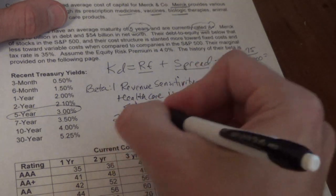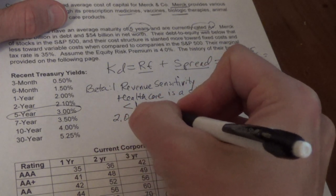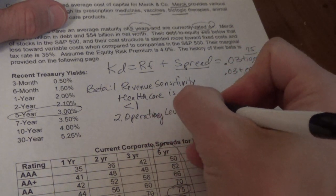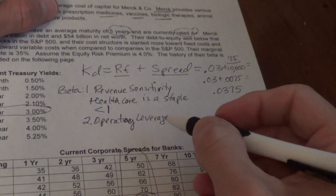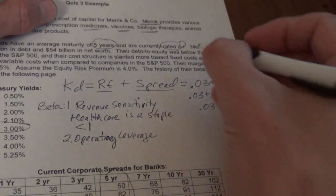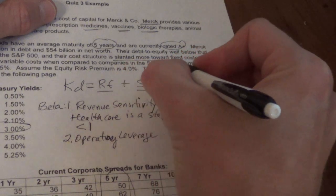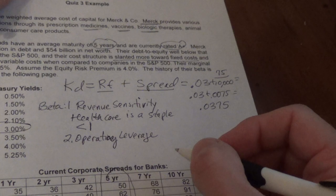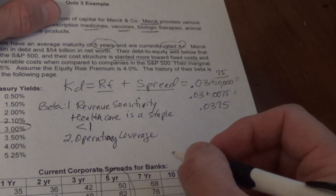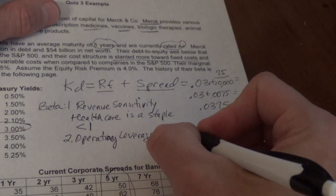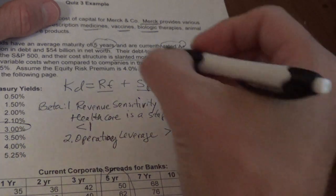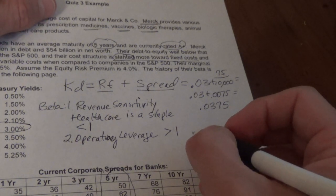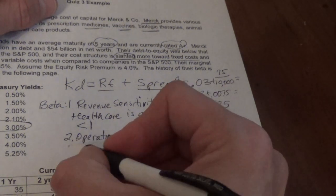The second thing is operating leverage. Operating leverage is a measure of how much fixed cost is in their structure. In this case they are slanted more toward fixed costs than the average S&P company, which makes sense because as a pharmaceutical they have high research and development costs — an ongoing cost. That implies greater than one, but it's not excessive, just slightly higher than one.